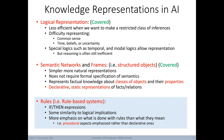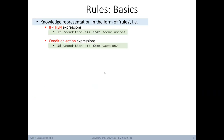We begin by looking at rules as another form of knowledge representation. The first key representations were logical representations; later we learned about semantic networks and frames; and today we talk about rules. Rules are pretty straightforward — they're typically given as if-then expressions: if one or more conditions, then some conclusion. They can similarly be represented as condition-action expressions. Rules are effectively propositional or first-order logic implications.